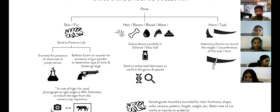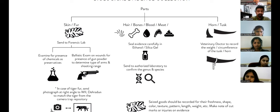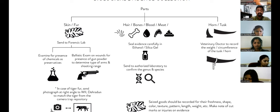Wildlife Institute of India is one of the labs. Others include LACONES in Hyderabad and one more in Kerala. There are a few labs in India with expertise to process these evidences. Normal forensics labs, although they may have the facilities, lack expertise and also require a strong reference library — something I'll discuss once we cover the species identification pathway.